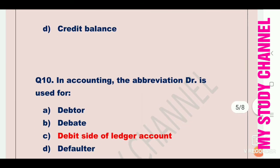In accounting, the abbreviation DR is used for what? Also, you should know that in your bank passbook, all abbreviations are written at the back pages — revise those too, as sometimes exam questions come from those abbreviations. Option A is debtor, B is debate, C is debit side of ledger account, and D is defaulter. Option C is the right answer, that is debit side of ledger account. DR is used for debit side of ledger account.